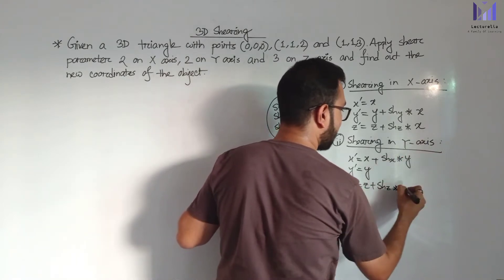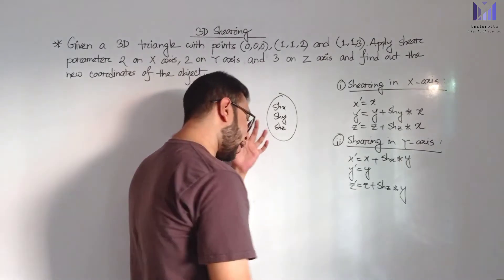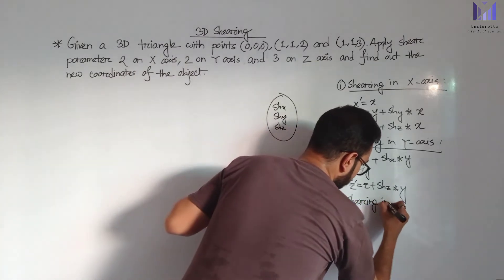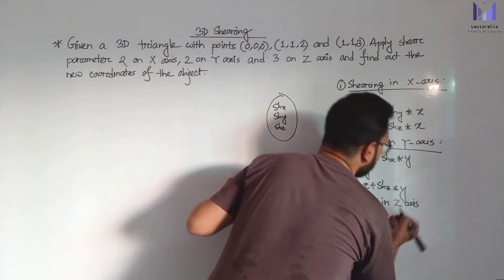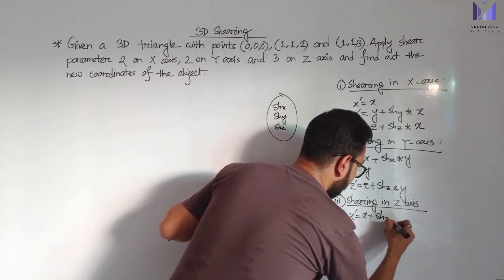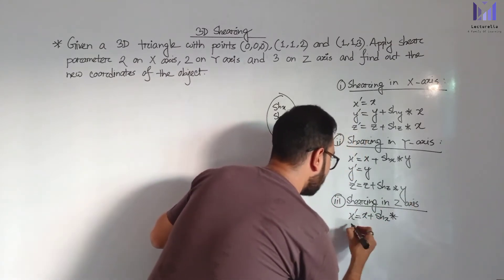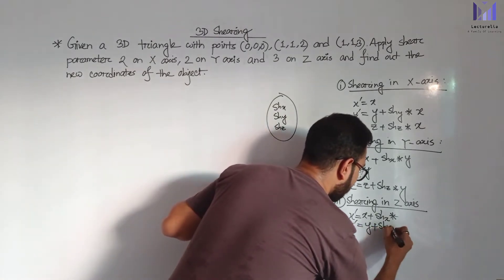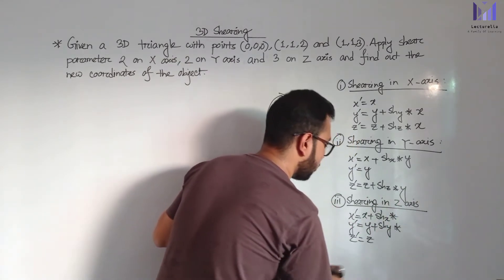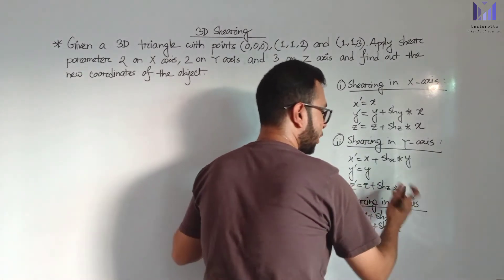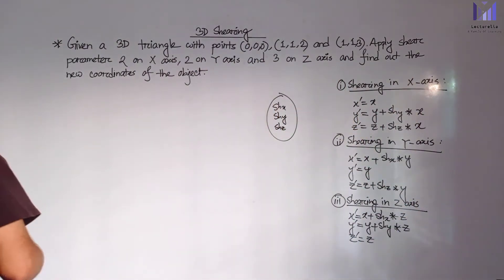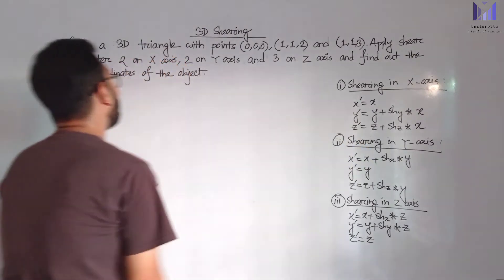For shearing in Y-axis, the equation involves multiplication. For shearing in Z-axis: X prime equals X plus shearing parameter X multiplied with something; Y prime equals Y plus shearing parameter Y multiplied with something. The shearing coach involves multiplication of the old value — that is the equation format for all three axes.